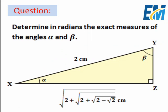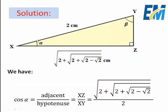Let us start with the angle alpha. With respect to alpha, XZ is the adjacent side and XY is the hypotenuse. So we use cosine alpha, since cosine equals adjacent over hypotenuse: cos α = XZ / XY. Since XZ equals √(2 + √(2 + √(2 − √2))) and XY equals 2, we get cos α = √(2 + √(2 + √(2 − √2))) / 2.